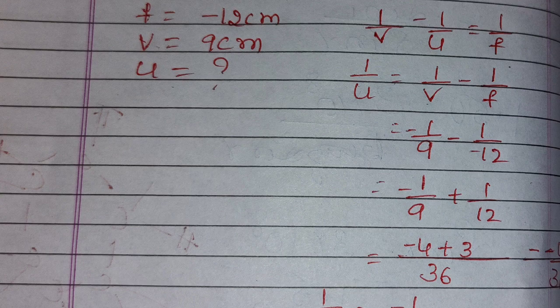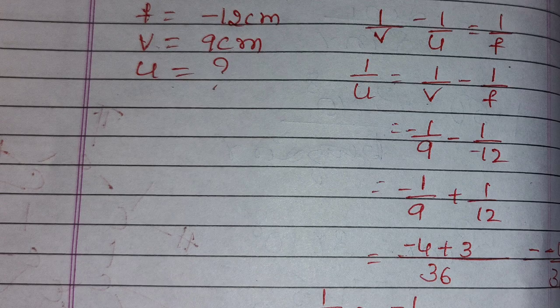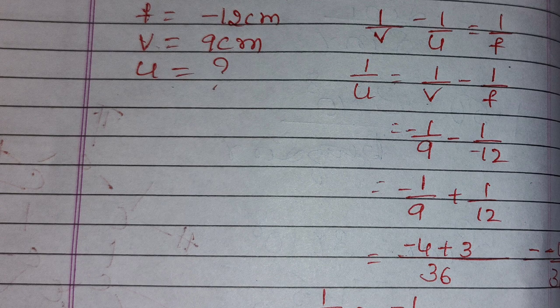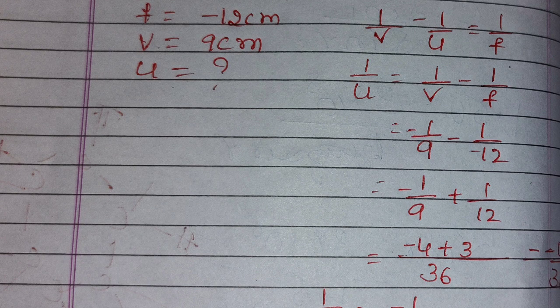In the given figure, they have given focal length that is 12 centimeter. So f equals minus 12 centimeter, v equals minus 9 centimeter. We have to find out u, where the object will be placed, the distance between the object.